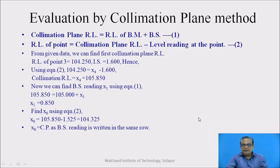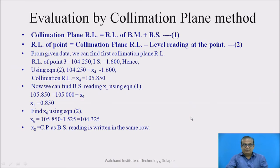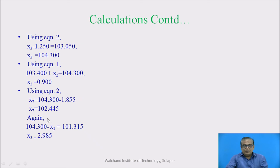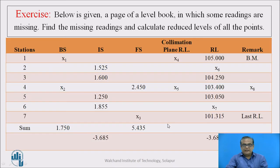Now what remains next unknown value is x7. So here we know collimation plane RL, we know reading, intermediate side reading of station 6. So x5 minus 1.855 will be equal to RL of that particular station, station number 6, that is x7. So x7 is also found, it is 102.445, write down here.